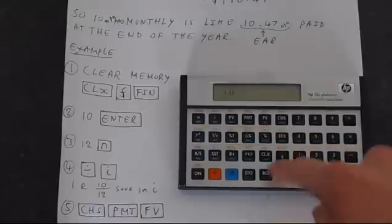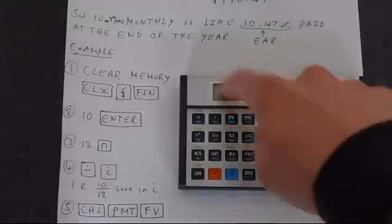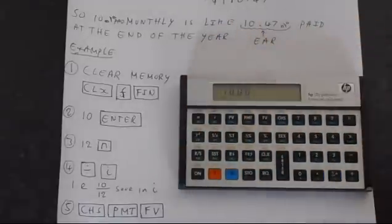Let's start by entering 10. So 10, enter—that's our interest rate, 10%. We'll save it into the memory by pressing the enter key.